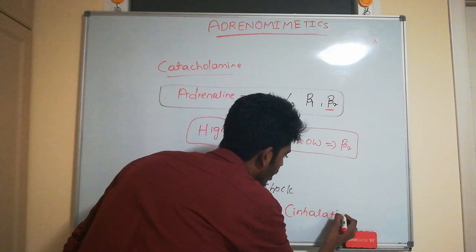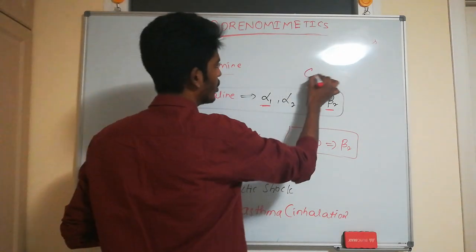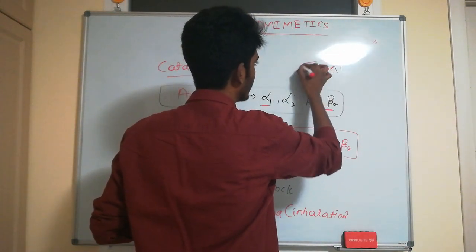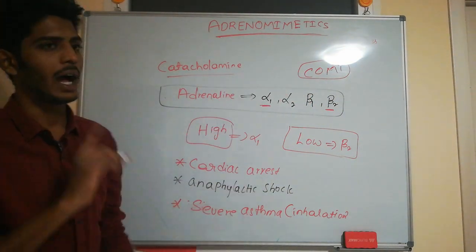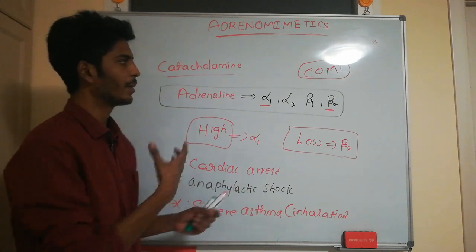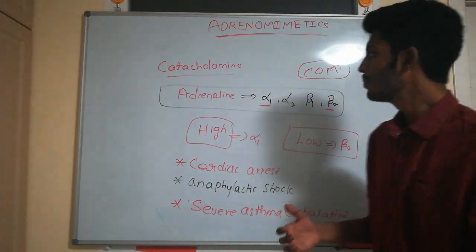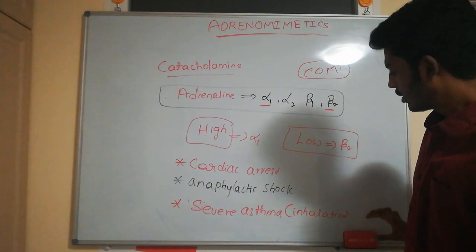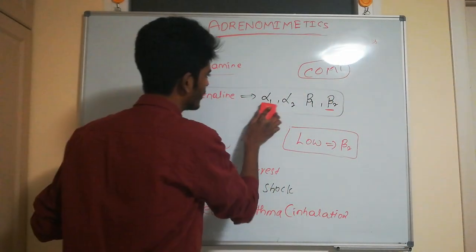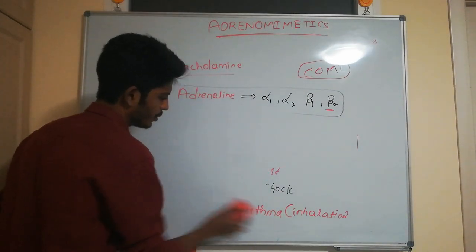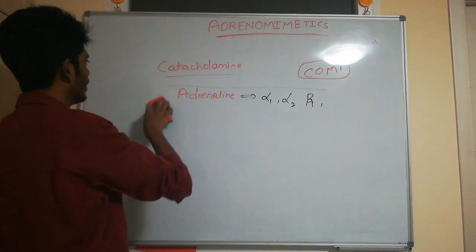Adrenaline is a natural substance metabolized by the enzyme COMT, which also metabolizes noradrenaline. The metabolites are excreted in urine. Note that adrenaline is also called epinephrine, and noradrenaline is also called norepinephrine.